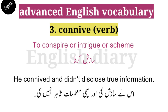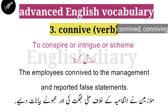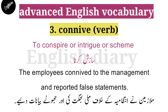For example: He connived and did not disclose true information — us ne saajish ki aur sachi maalumaat zaahir nahi ki. The past form of connive is 'connived' and the continuous form is 'conniving.' Another example: The employees connived with the management and reported false statements — mulazmin ne intizamiya se mili bhagat ki aur jhoote bayaan diye. So 'connived' means saajish karna.